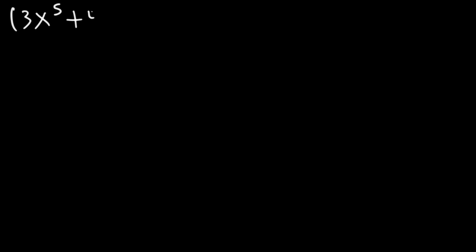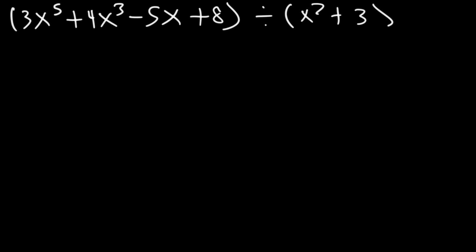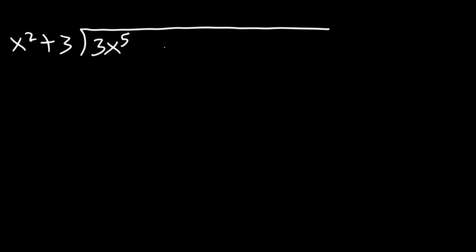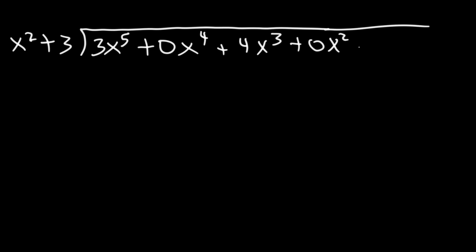Here's another one. Divide 3x to the fifth power plus 4x cubed minus 5x plus 8, divided by x squared plus 3. We're going to need a lot of space. The divisor x squared plus 3 goes on the outside, and for the dividend we write 3x to the fifth power, then 0x to the fourth power, then 4x cubed, then plus 0x squared, then minus 5x, then plus 8.